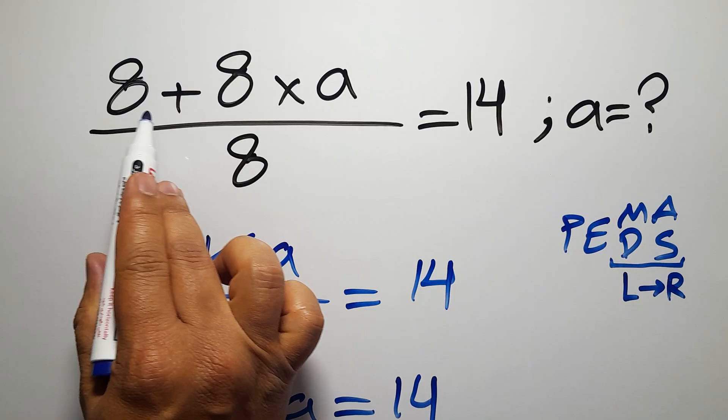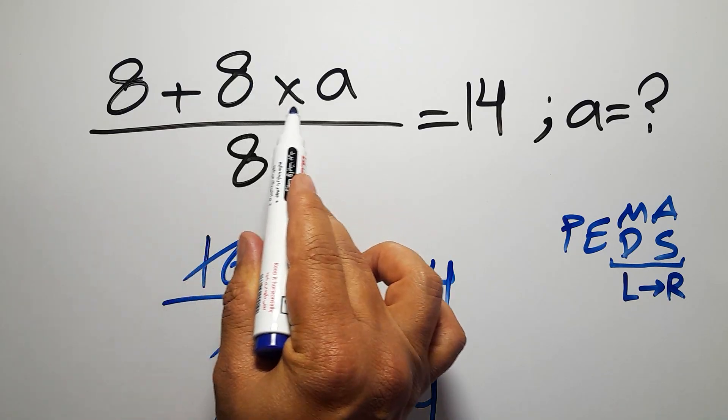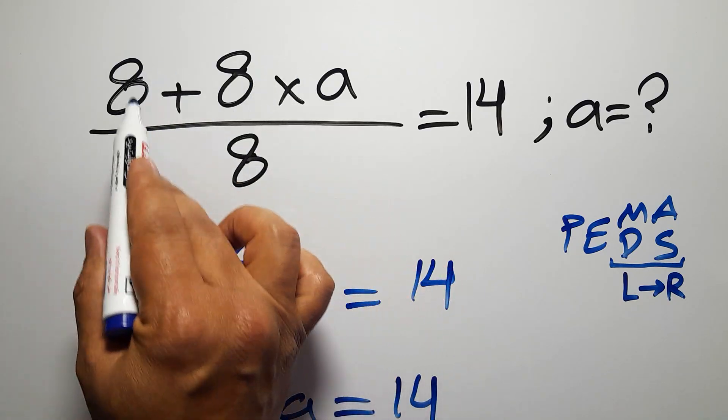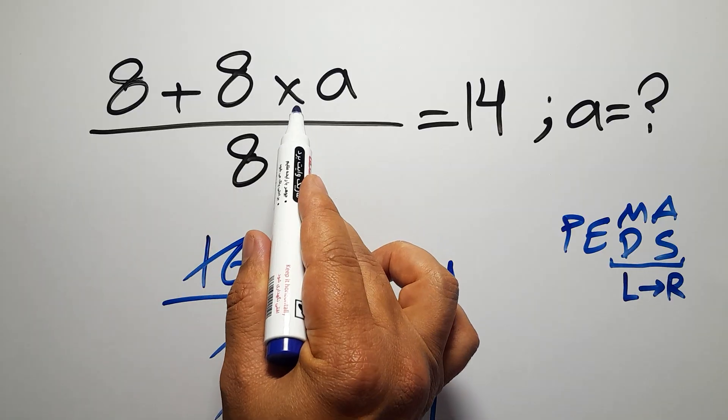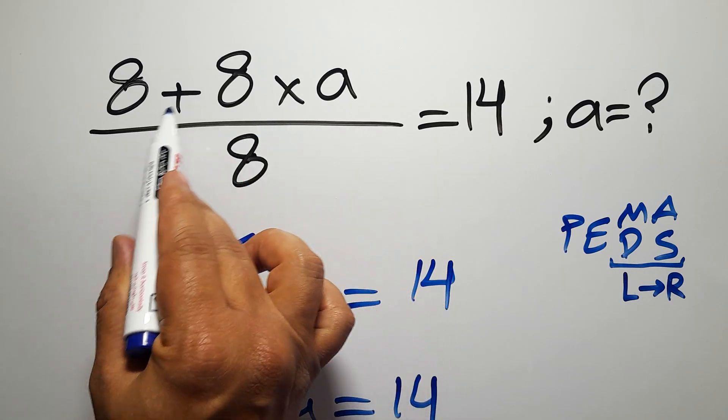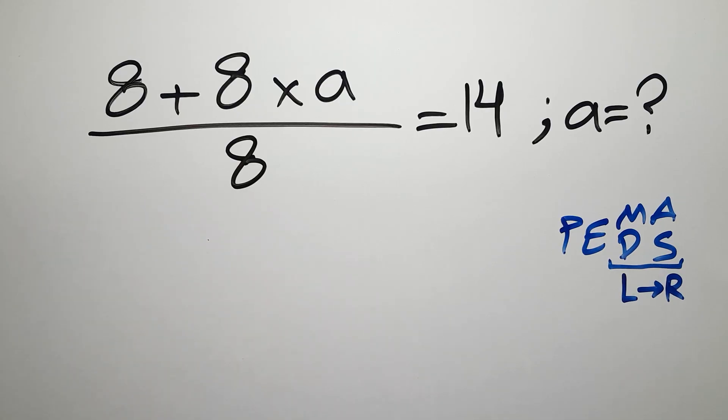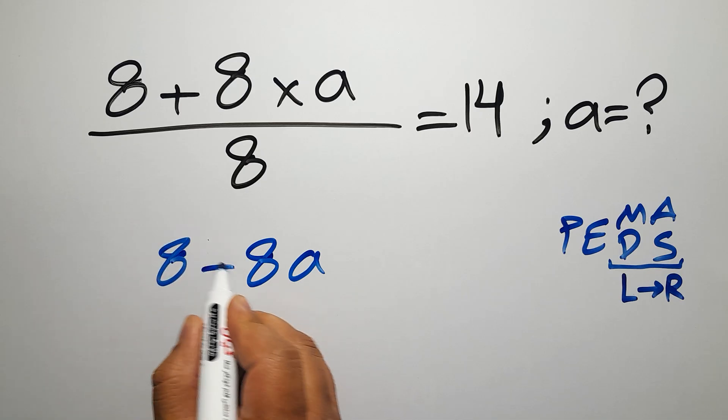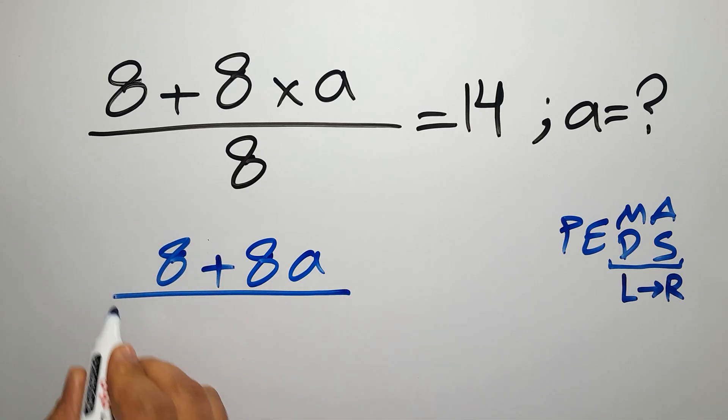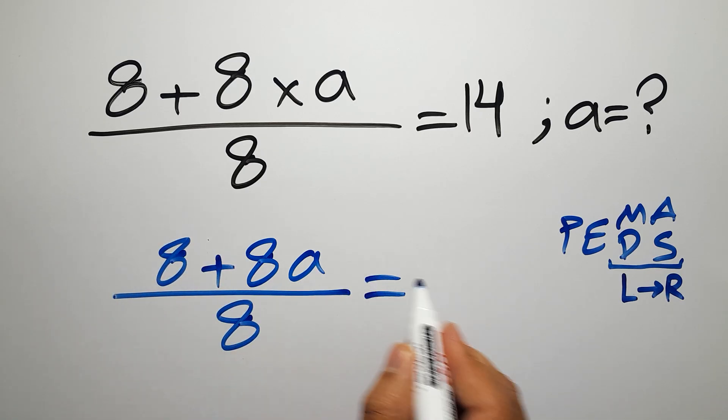Here in the numerator, first we have to do this multiplication, not this addition, and after this multiplication we have to do addition. So first, 8 times a, which gives us 8a. So 8 plus 8a over 8 equals 14.